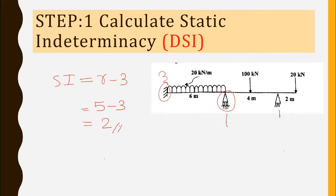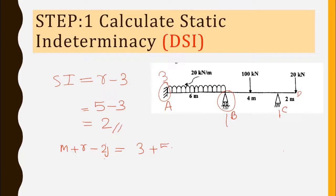We can also calculate using the equation m plus r minus 2j, where m is the number of members. Here we have three members: AB, BC, and CD. So three members plus five reactions minus two times three joints gives 8 minus 6, which also equals 2. Either way, the static indeterminacy is 2.